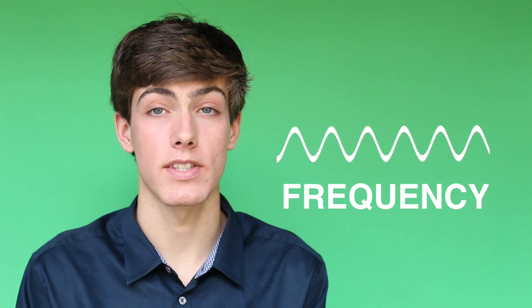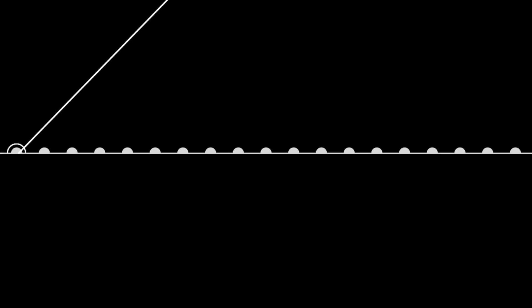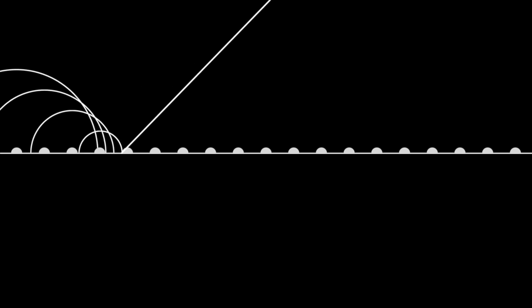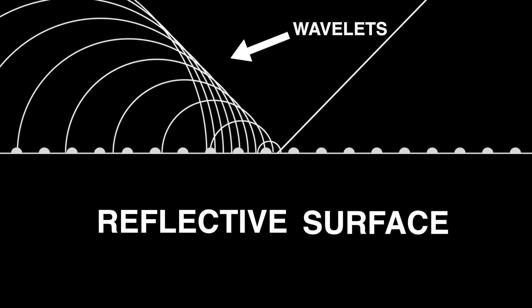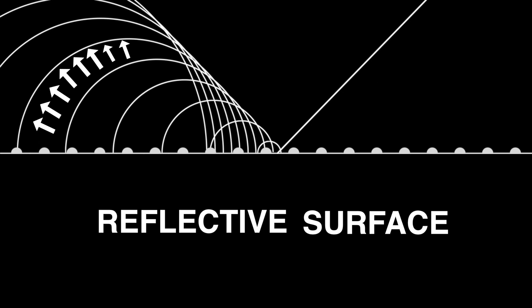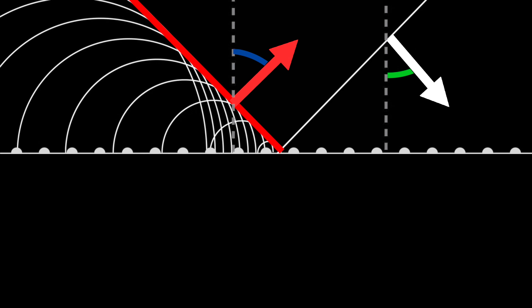This is called the wave-particle duality of light, and explains properties of light like wavelength, frequency, and as we'll see, reflection. In this animation, you can see the incoming light wave. As each portion of the wavefront strikes the reflective surface, wavelets radiate out in all directions. But the preponderance of the reflected wavefront is moving away from the normal at the same angle as the incident wavefront. This is a very cool illustration of why the angles of incidence and reflection are the same.